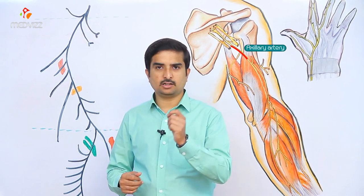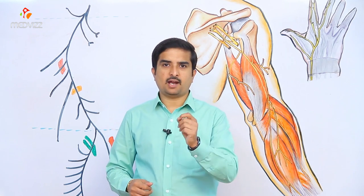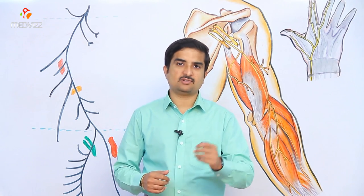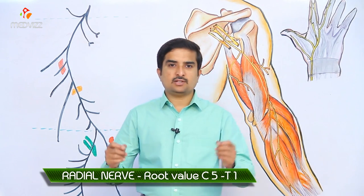The radial nerve arises from the posterior cord of the brachial plexus behind the third part of the axillary artery. At that location the posterior cord gives off two terminal branches: one is the axillary nerve and the other is the radial nerve, with a root value of C5 to T1. The radial nerve gives off two types of branches — one sensory and one motor.